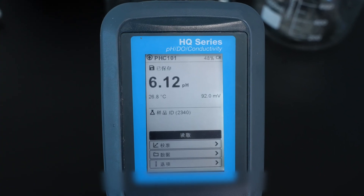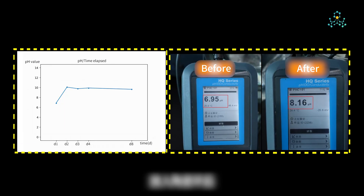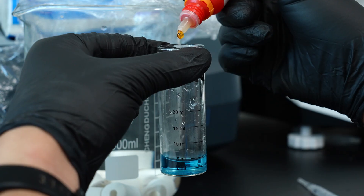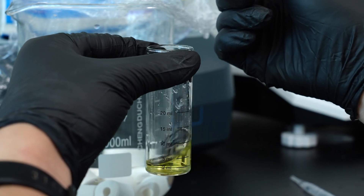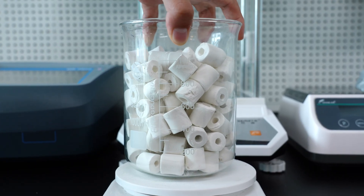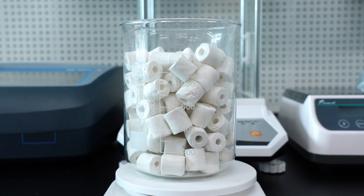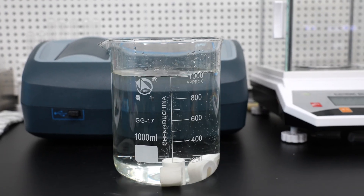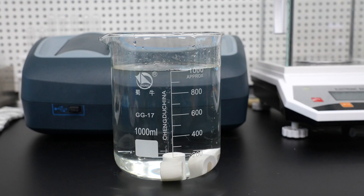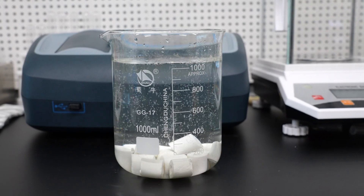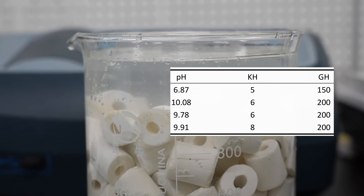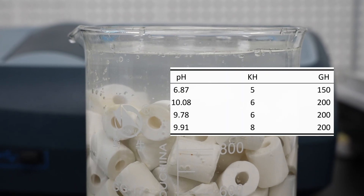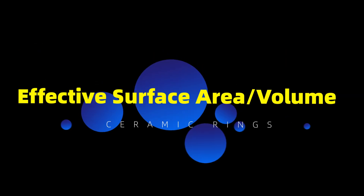We found that after adding the ceramic ring, the pH value in water rose from 6.95 to 8.16, while pH and GH did not change. To ensure the rigour of the experiment, we tested an amplified group in the same way — putting about 1 litre of clean ceramic rings into a beaker and adding water to submerge them. We observed that the pH value was greatly affected, confirming that the ceramic rings selected in this experiment do increase the pH value of the water.